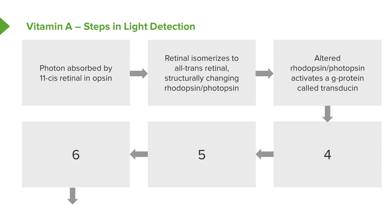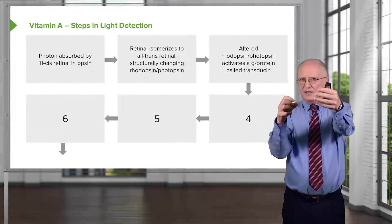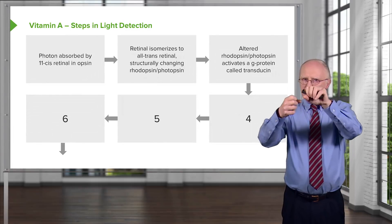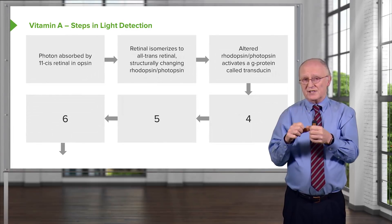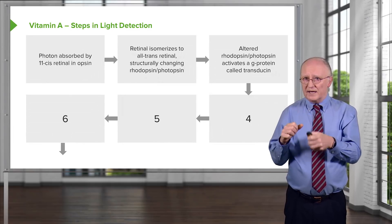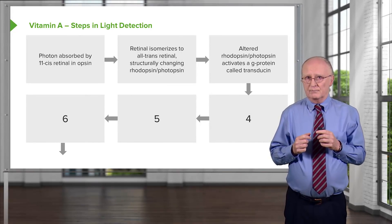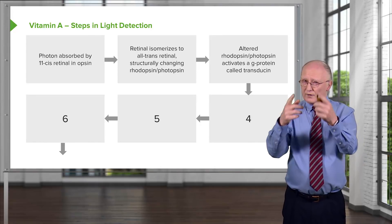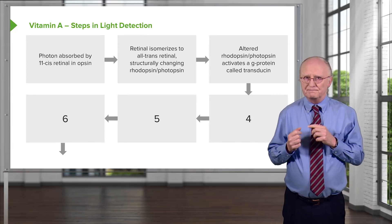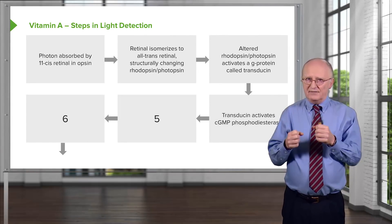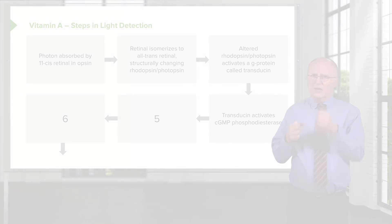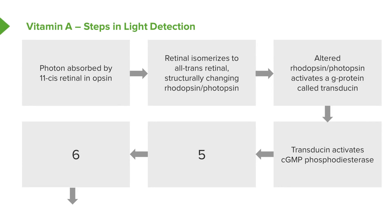This protein change is communicated into the cell. Rhodopsin and photopsin are membrane proteins found in the membrane of these cells, with an outside portion and an inside portion. The change in structure changes the inside portion of the cell, where a G-protein known as transducin is located. The transducin, activated ultimately by this photon of light, goes and activates another enzyme known as cGMP phosphodiesterase, or simply phosphodiesterase.